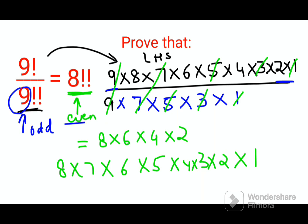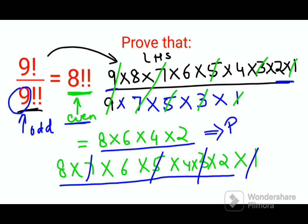Now out of this, since 8 is an even number, we'll cancel all the odd numbers. So if you see, you are left with 8, 6, 4, 2, which is your answer. So this is now coming out to be your RHS.